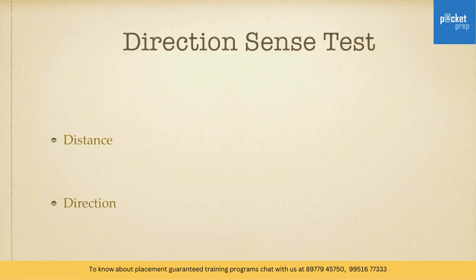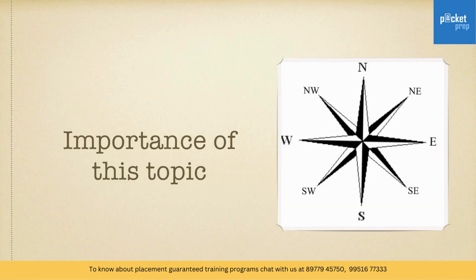Hello, my name is Pranay Sai and our topic for now is Direction Sense Test. Direction Sense Test involves two major parameters: one is distance and the other is direction. You are provided with a sequence of directions and distances and you need to figure out the final direction and distance based on the given data. Direction Sense Test helps you to trace and follow directions and sense them accurately.